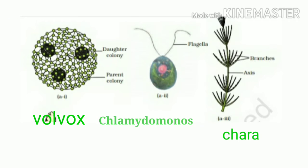These are examples whose diagrams are given. Volvox is a ball-shaped algae. Chlamydomonas is a flagellated unicellular algae. And that is Chara — Chara looks like a small plant, but it is not a plant with differentiated root, stem, and leaves. The root, stem, and leaves are not differentiated in Chara.